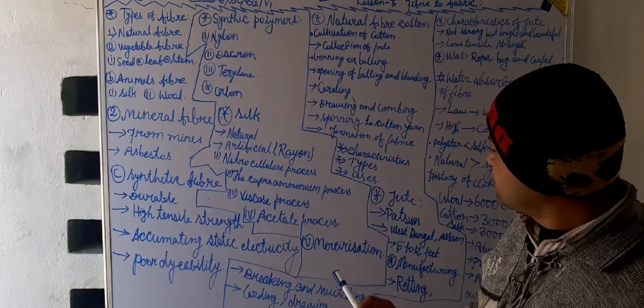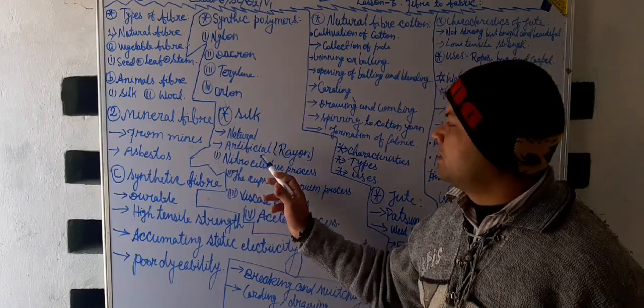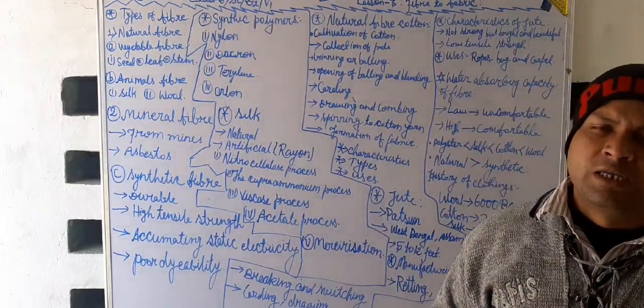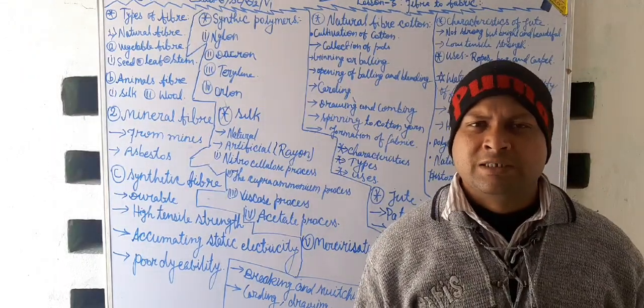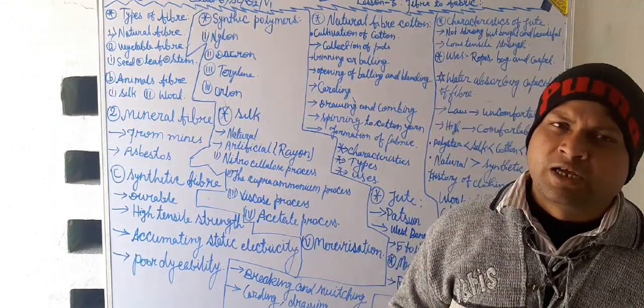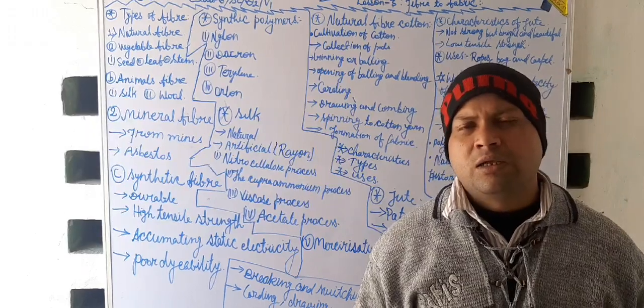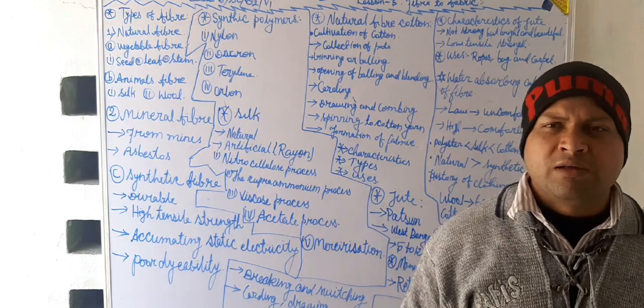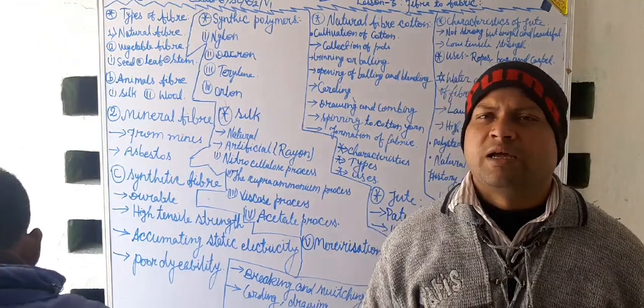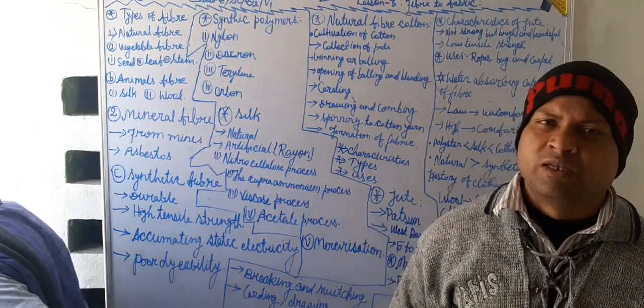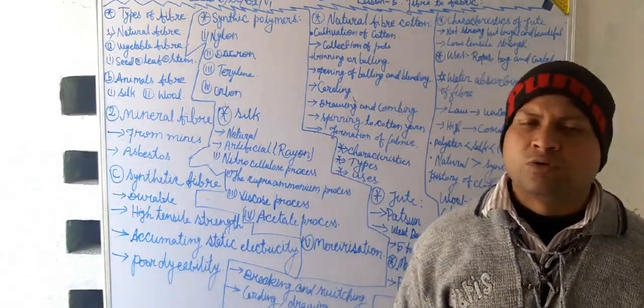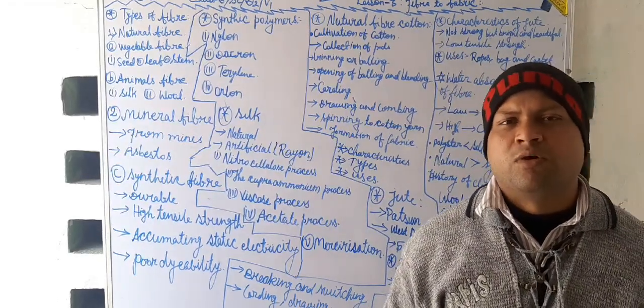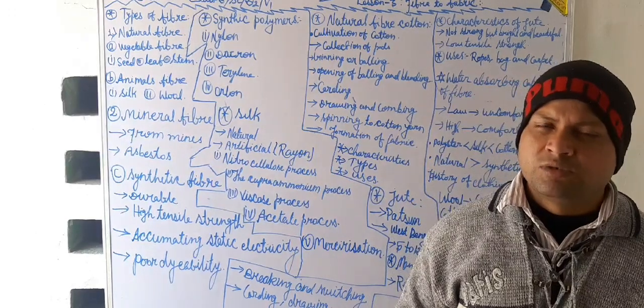There are two types of fibers. One is natural and second is synthetic. Synthetic fiber is also called as artificial fibers. Again, natural fibers is divided into two categories, vegetable fibers and animal fibers. Vegetable fibers are also categorized on the basis of the fiber obtained from the seeds, from the leaves and from the stems.